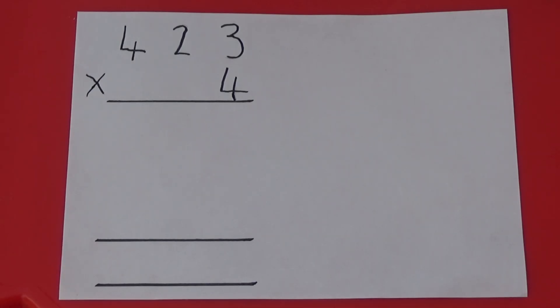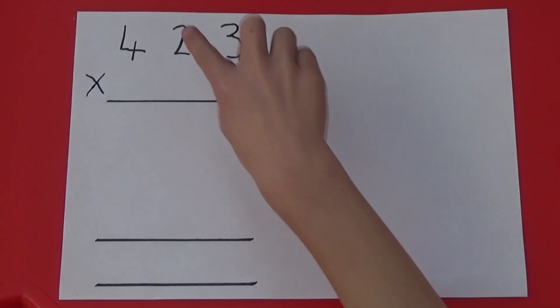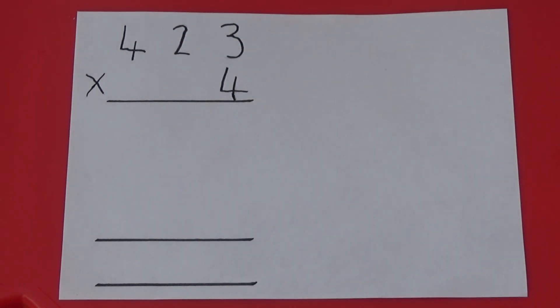When we first move from grid method to column method, we look at something called expanded method. I'm going to show you how this works. Here I have written 423 and underneath I have written the 4 which I am multiplying by.